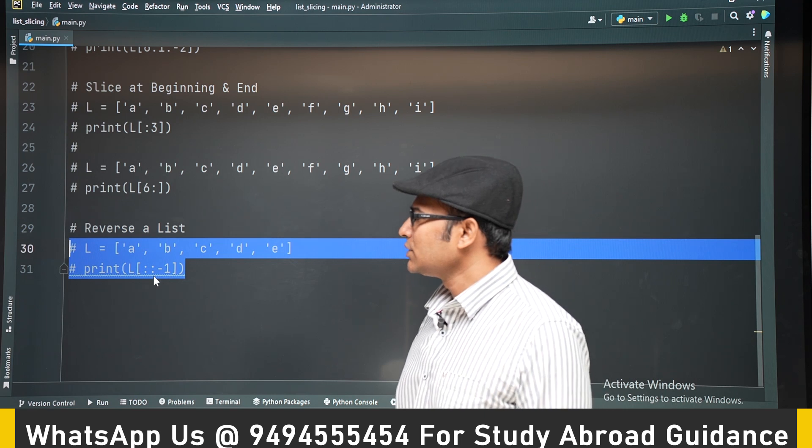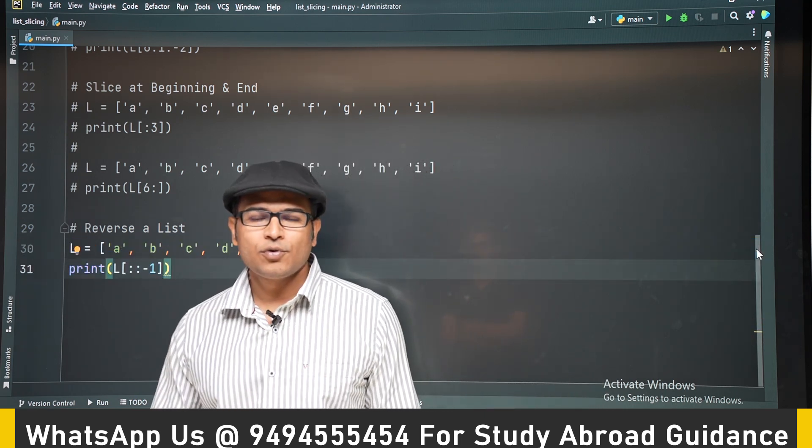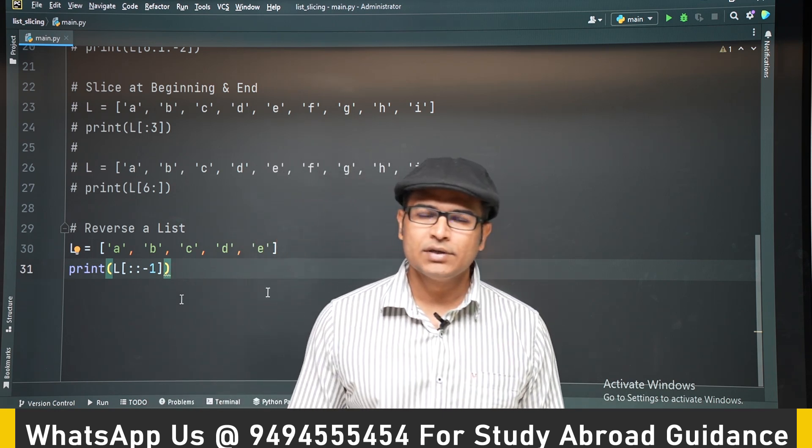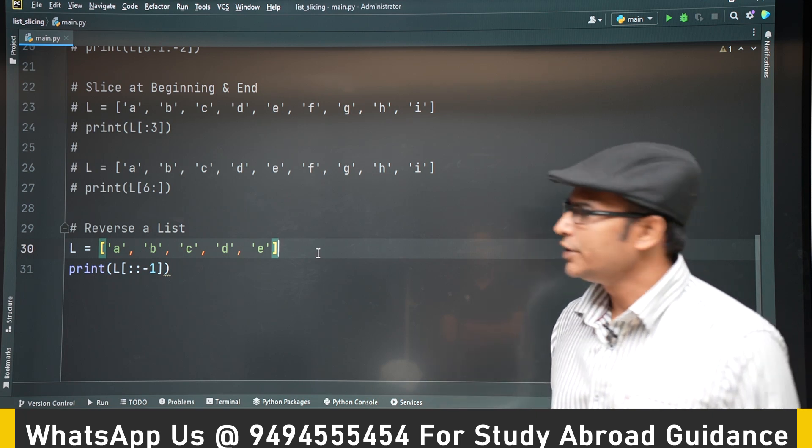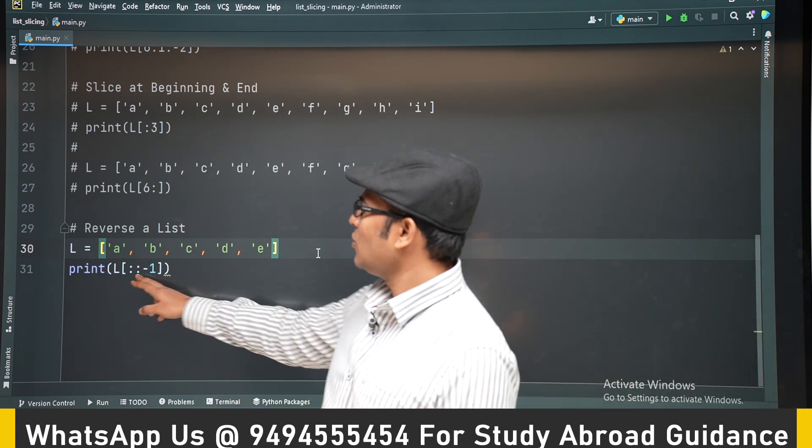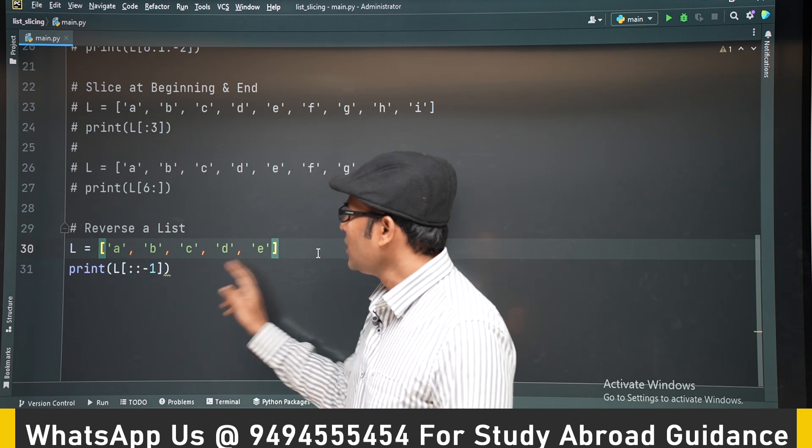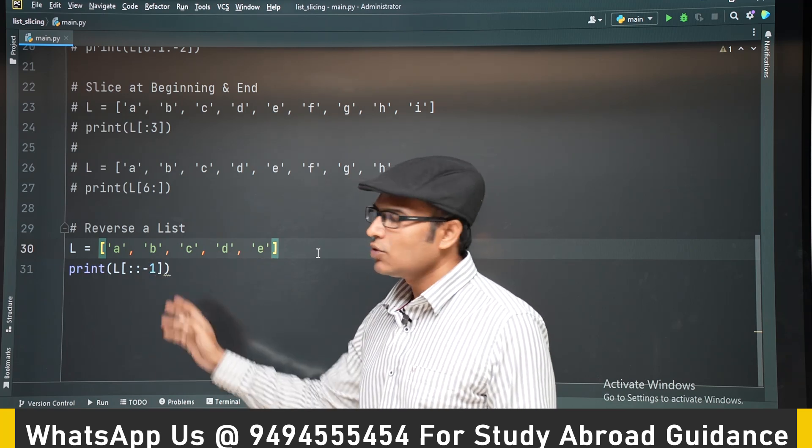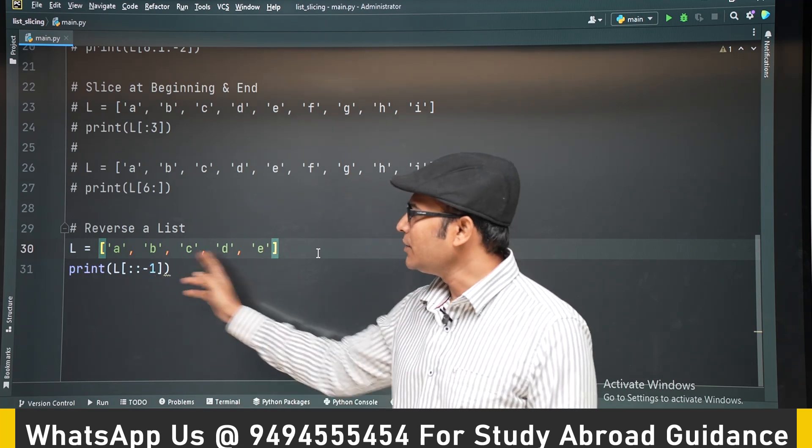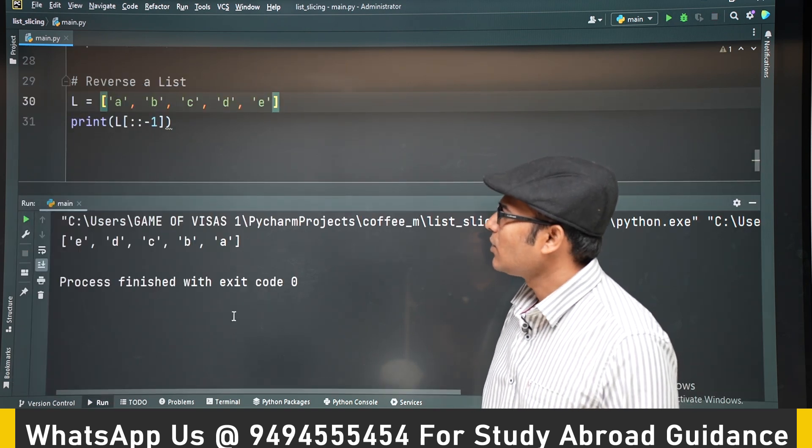Similarly, you can reverse a list just using one line of code. In other programming languages it is not available. If you want to reverse a list in just one line, you can write semicolon semicolon minus 1, which means it is going from starting to ending. But minus 1 means from the ending it is going to end, and every step is 1. So all the elements will be printed from the end.